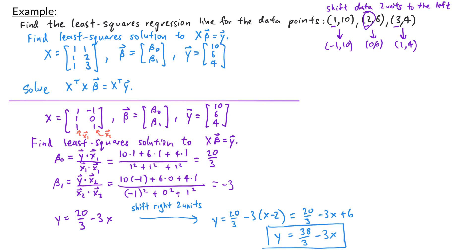The takeaway is that sometimes you can make your calculations easier by taking advantage of the symmetry in your data set. If you can shift your data so that you have orthogonal columns for X, then you can find beta by just taking the projection of y onto the columns of X. In our next video, we'll look at different regression models.